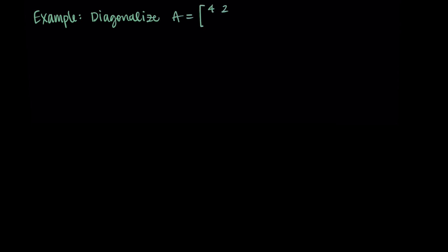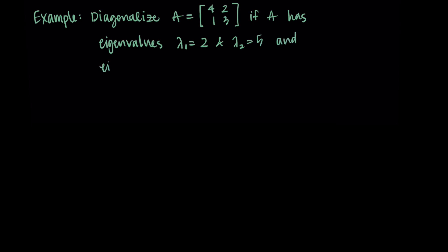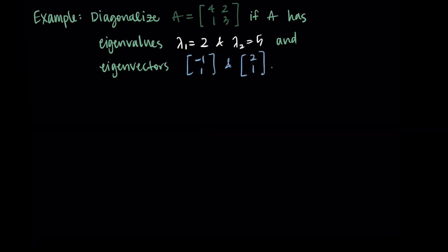To close out this video, let's do a quick example with a matrix used in a past video. Let's diagonalize the matrix A equal to [4, 2; 1, 3], a two by two matrix, given that A has eigenvalues lambda 1 equals 2 and lambda 2 equals 5, with corresponding eigenvectors negative 1, 1 and 2, 1. So A has two eigenvalues with two corresponding eigenvectors.